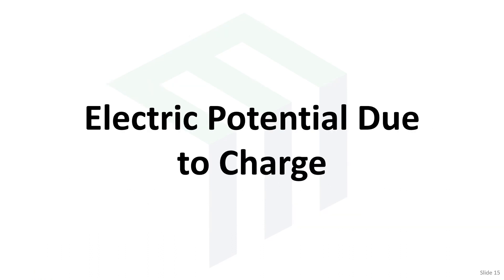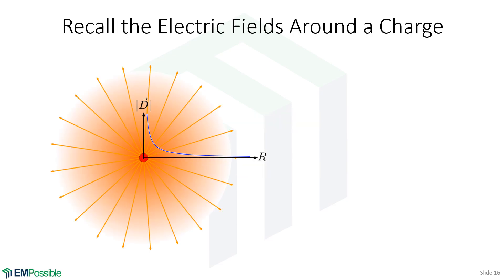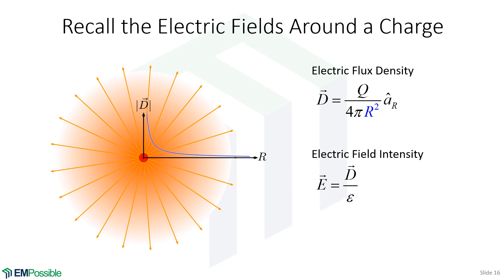Now let's consider the electric potential due to a point charge. We always think about this in two steps: first, the electric flux density D, which is most closely associated with charge; then we calculate the electric field intensity E from D by dividing by the permittivity ε. Calculating D and then E creates less opportunity for error than jumping straight to E.